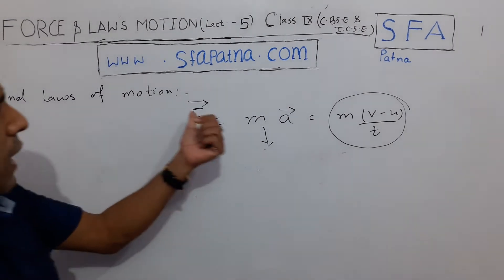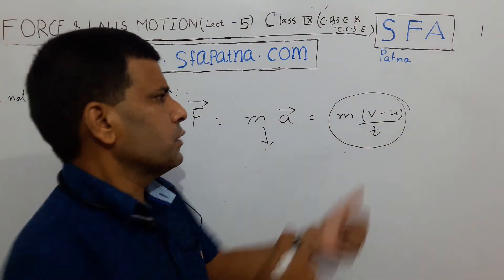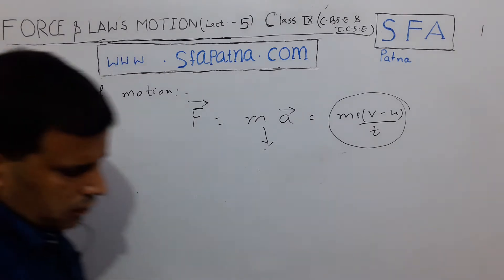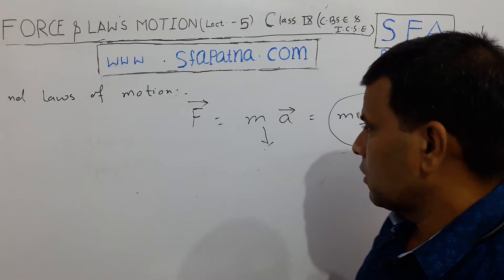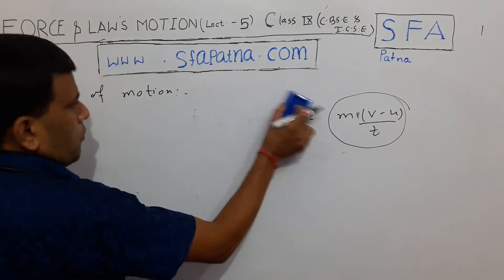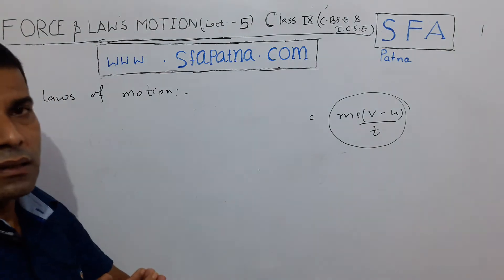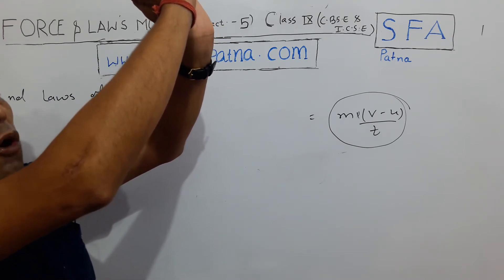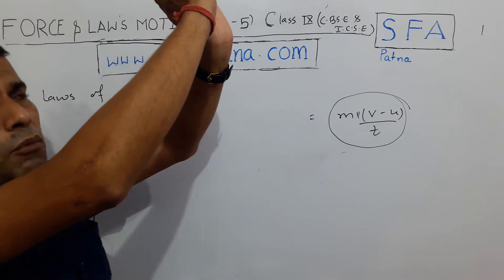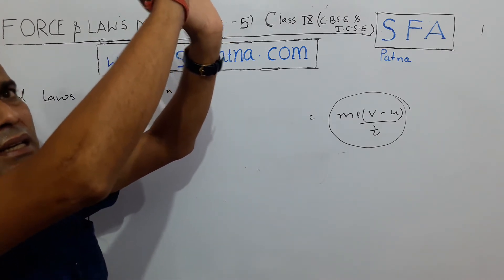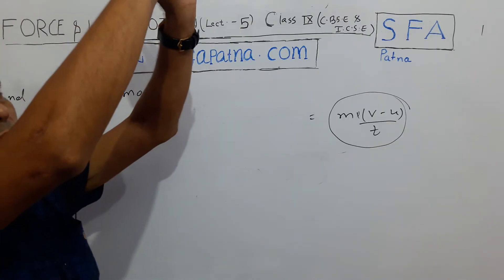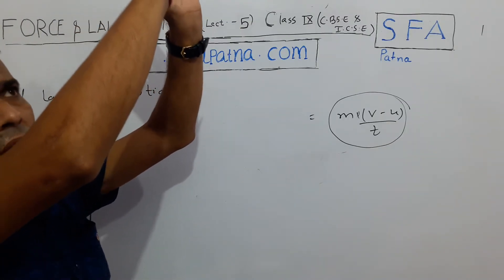Now let's look at some examples to make concepts even more clear. The concept: Force equals mass into (V minus U) divided by T — this is a very important formula. For example, consider a cricket player. When a cricket player catches a ball, you observe that he moves his hand downward. Why? Why doesn't he catch it with his hand held stiff? If he doesn't move his hand down, to stop the ball he needs more force, because the ball's velocity is high.